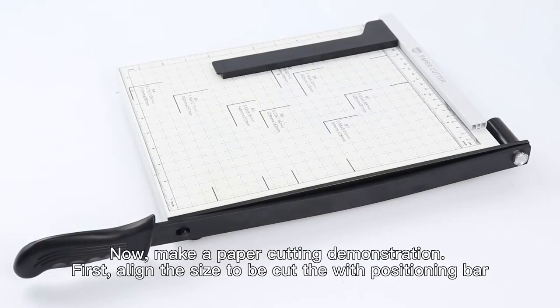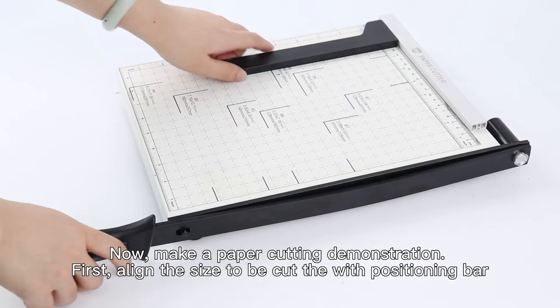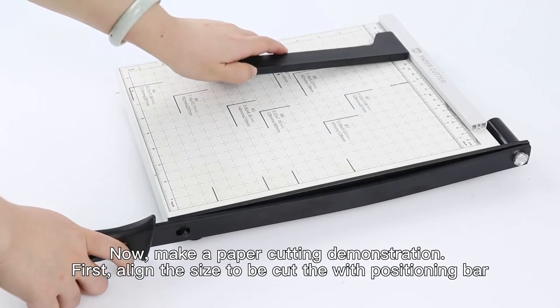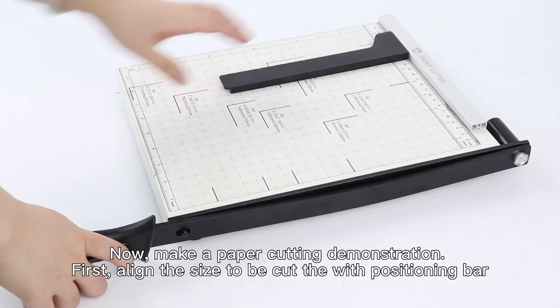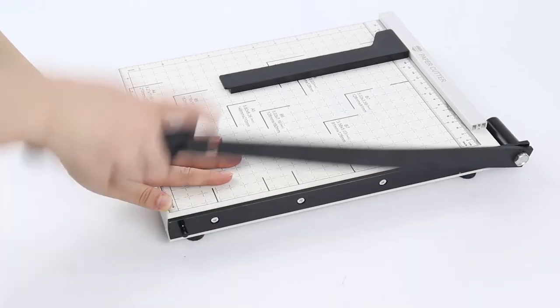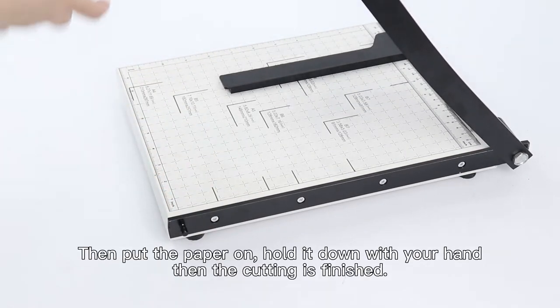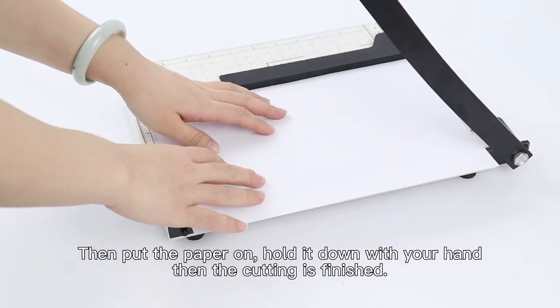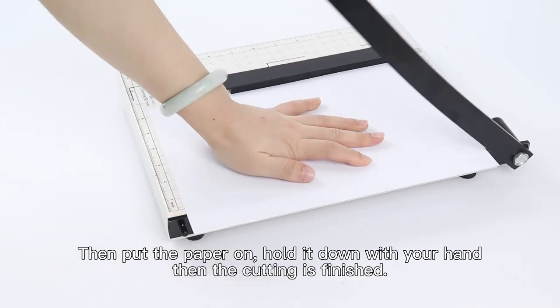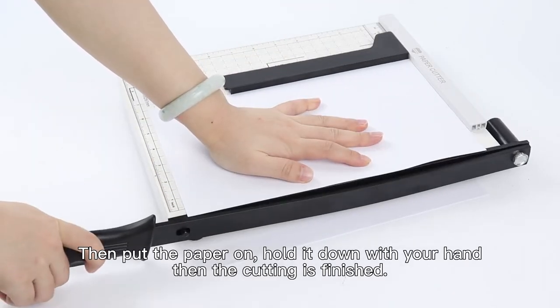Now make a paper cutting demonstration. First align the sides to be cut with this magnetic positioning bar. Put the paper on, hold it down with your hand. Then the cutting is finished.